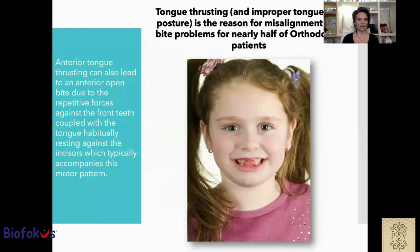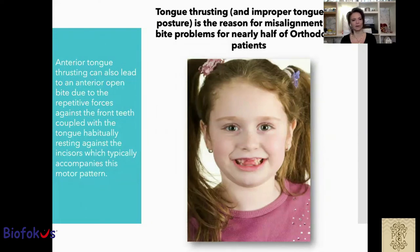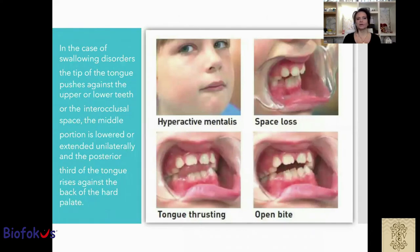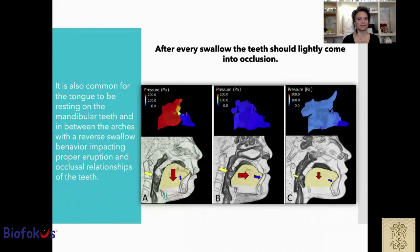Tongue thrusting is the reason for misaligned teeth and bite problems in nearly half of orthodontic patients. Anterior tongue thrusting can also lead to anterior open bite due to repetitive forces against the front teeth, coupled with the tongue habitually resting against the incisors. In the case of swallowing disorder, the tip of the tongue pushes against the upper and lower teeth or the interocclusal space; the middle portion is lowered or extended unilaterally, and the posterior third rises against the back of the hard palate. After every swallow, the teeth should come back into occlusion. It is also common for the tongue to be resting on the mandibular teeth and between the arches with a reverse swallow behavior.